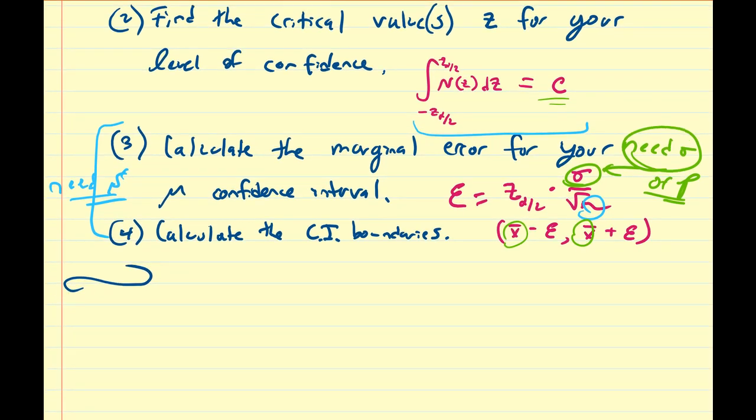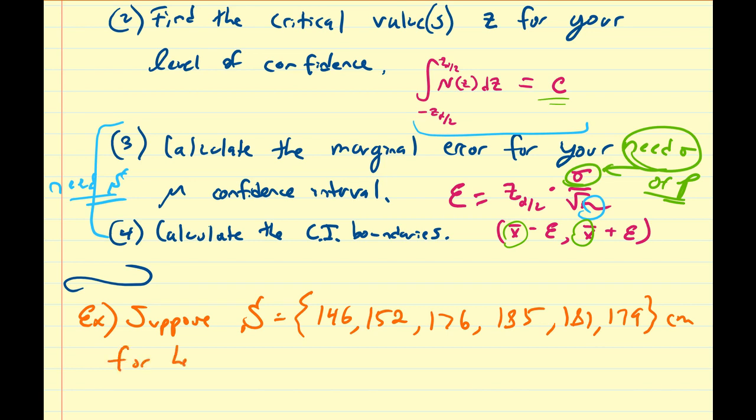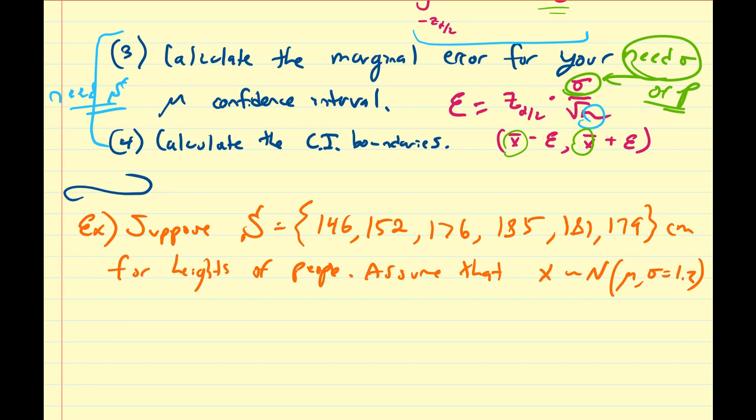So let's do a practical example of how to calculate one. Suppose that we have some sample S, and S is going to consist of some numbers: 146, 152, 176, 185, 181, and 179. Let us assume these are centimeters for heights of people. Let us assume that these values x are normally distributed with some mean mu that we do not know, and standard deviation sigma equal to 1.2. Later we're going to drop this assumption because we don't know anything about the population.